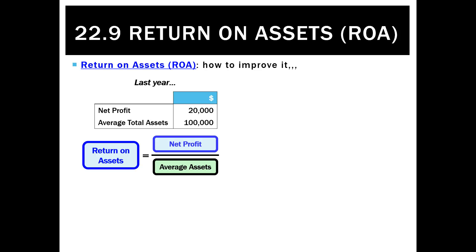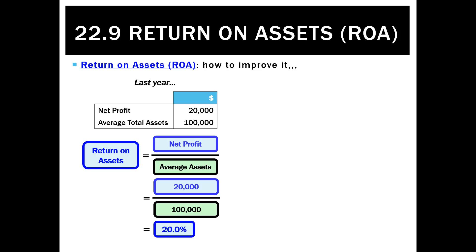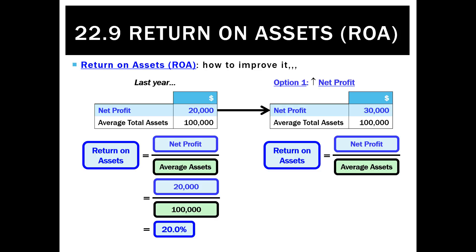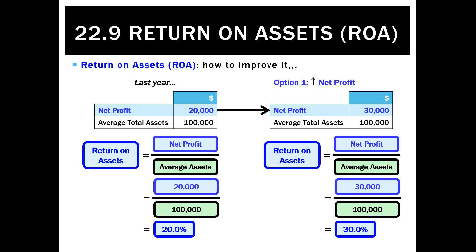Return on assets — how to improve it? We can either use the same number of assets. Last year we had $100,000 to make a net profit of $20,000, which is an ROA of 20%. We can use those assets better — use them to make a higher net profit, say $30,000. Maybe we can't buy any more assets, but by doing that we increase our efficiency and make our return on assets ratio go up to 30%.